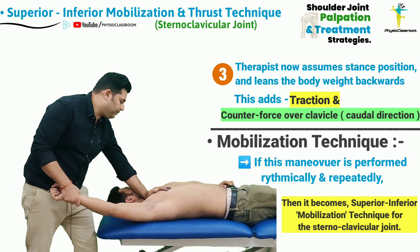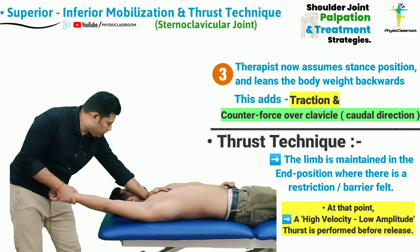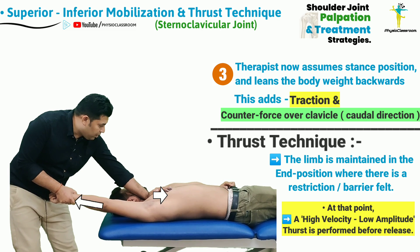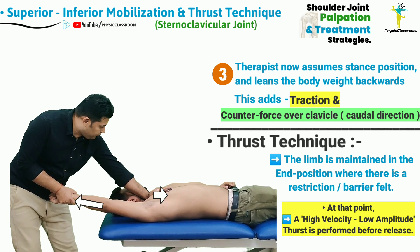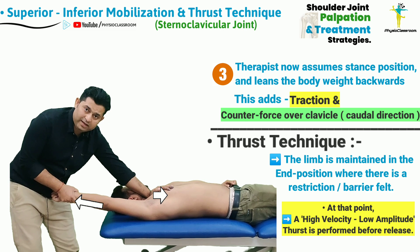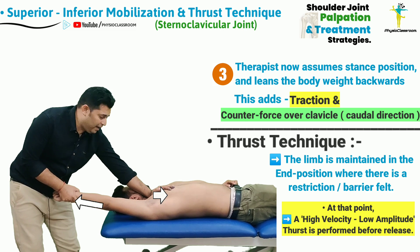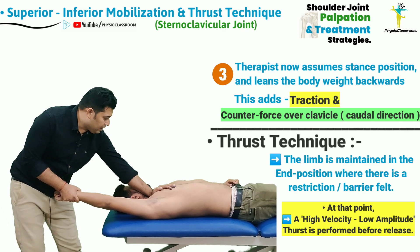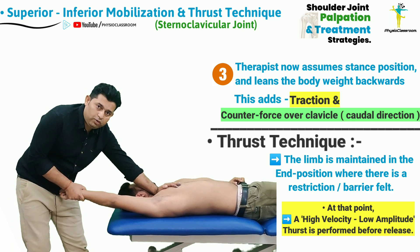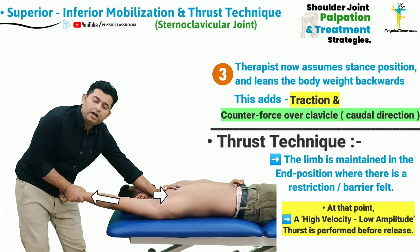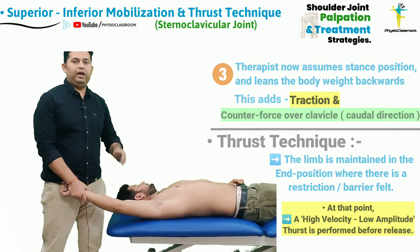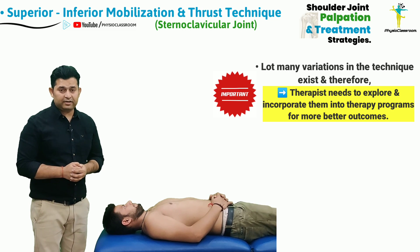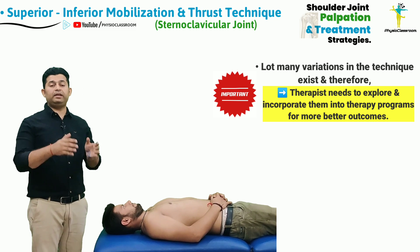If the therapist keeps on repeating this movement, it becomes the sternoclavicular joint mobilization for the superior to inferior glide. To deliver the manipulation or thrust, the therapist maintains the end position of pretension — from where no further movement in the downward direction is taking place — and then gives a high velocity low amplitude thrust to the clavicle bone utilizing the left hand.